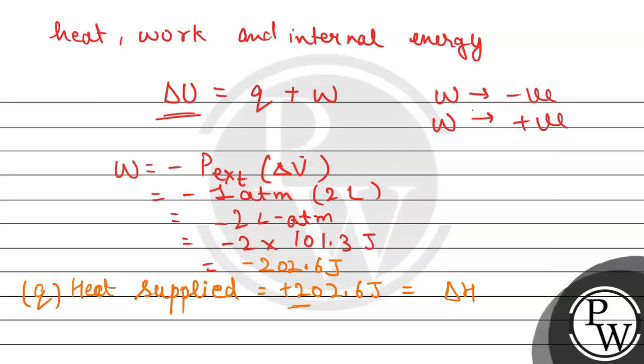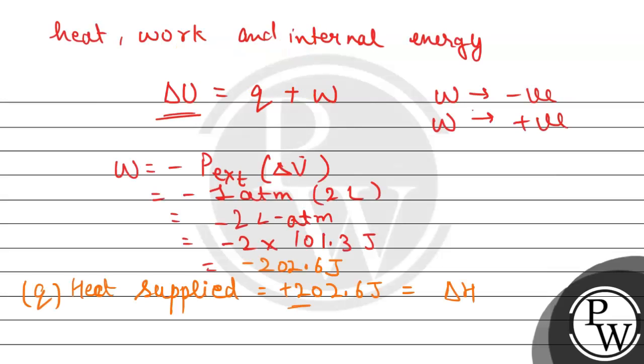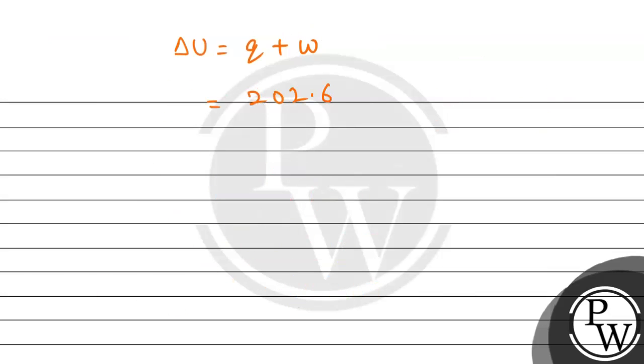From the first law of thermodynamics, we have delta U equals Q plus W. The value of the heat given or supplied is plus 202.6, and for work done we found that it is minus 202.6. So this will cancel, so it will be zero. The change in internal energy is zero, and the value of delta H is plus 202.6 joules.